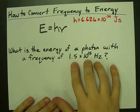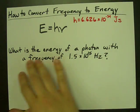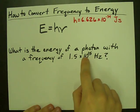How do you convert from a frequency of a photon to an energy? What is the energy of a photon that has a given frequency?